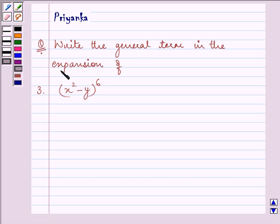It says write the general term in the expansion of x squared minus y whole raised to the power 6.